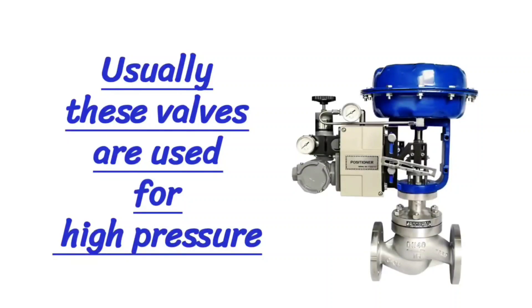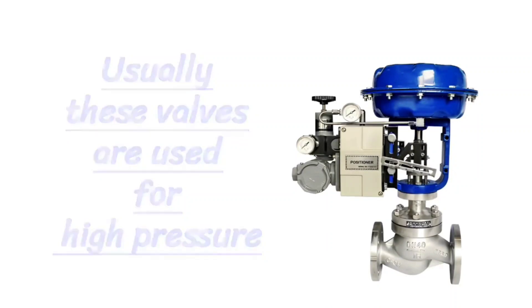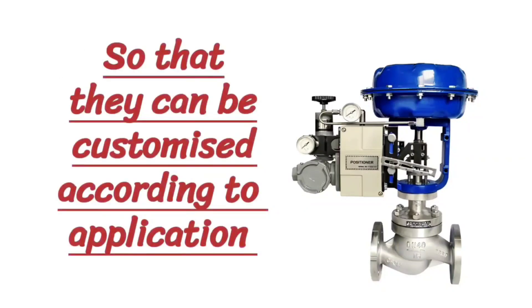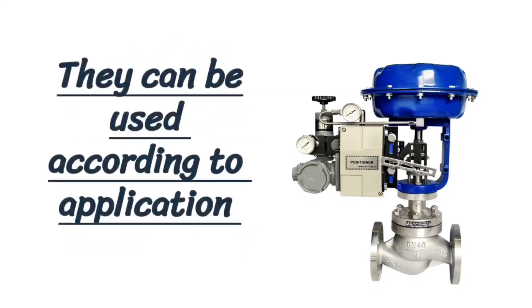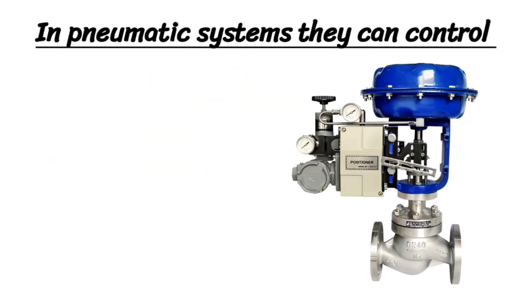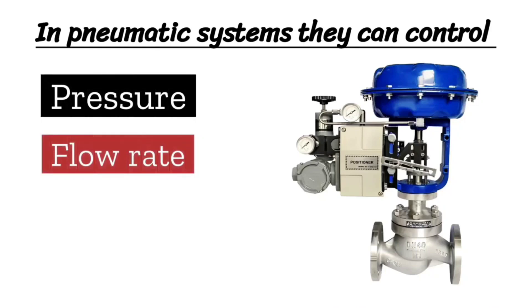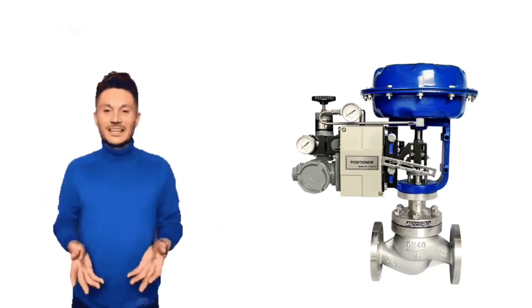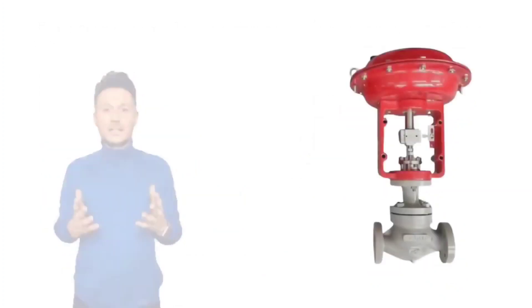When the valve is closed, the plug retracts onto the seat and stops fluid flow. These valves generally operate in high-pressure applications and they are used in many sizes and materials, so that they can be customized according to applications. In pneumatic systems, these valves can control pressure, flow rate, temperature, and other parameters. In addition, the valves can also be used in on-off applications.